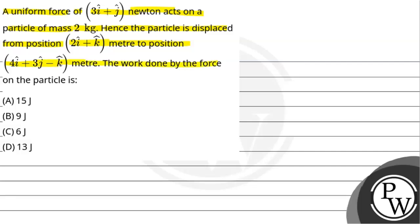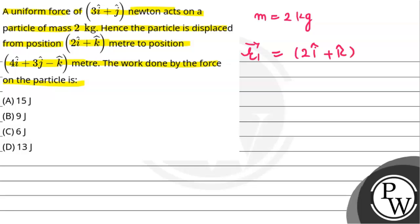The work done by the force on the particle is — so now we have a uniform force of 3 hat I plus hat J in Newton's, and mass m is equal to 2 kg. This particle is displaced from the position vector R1 equal to 2 hat I plus hat K, to R2 equal to 4 hat I plus 3 hat J minus hat K in meters. We need to calculate the work done by the force on the particle.